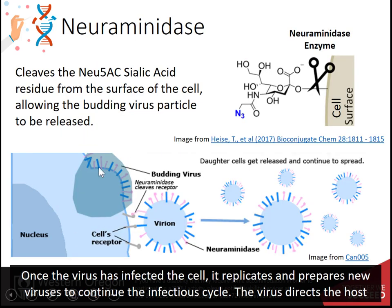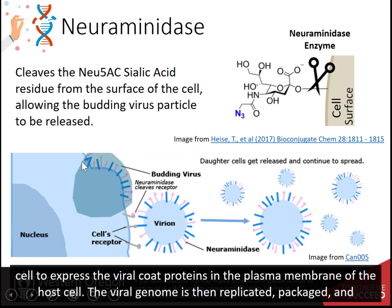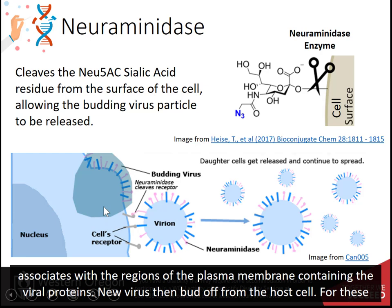Once the virus has infected the cell, it replicates and prepares new viruses to continue the infectious cycle. The virus directs the host cell to express the viral coat proteins in the plasma membrane of the host cell. The viral genome is then replicated, packaged, and associates with the regions of the plasma membrane containing the viral proteins. New viruses then bud off from the host cell.